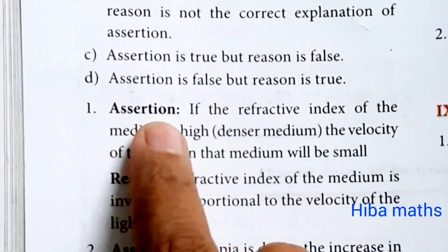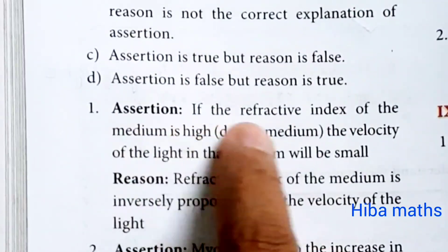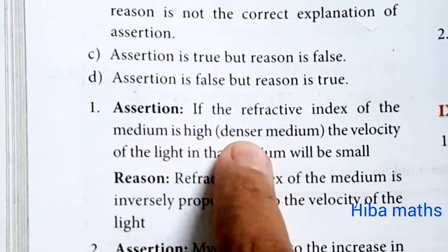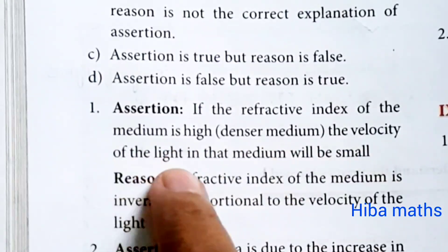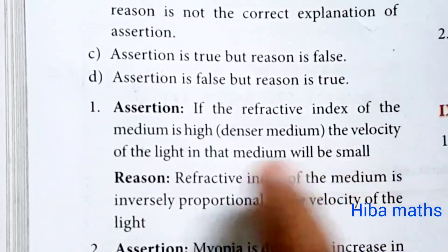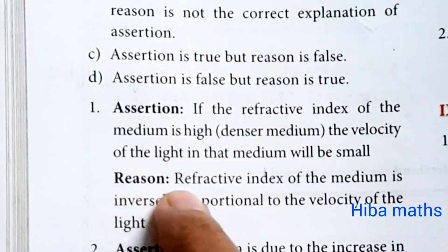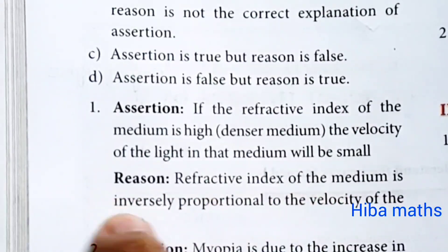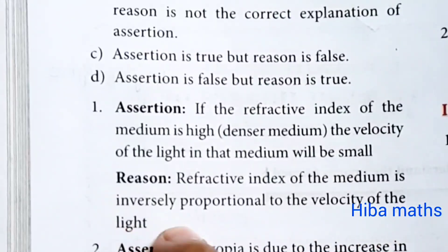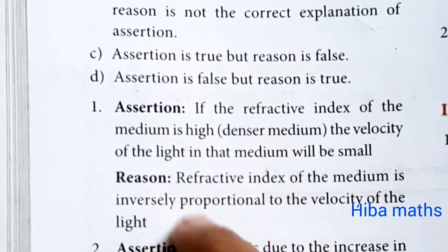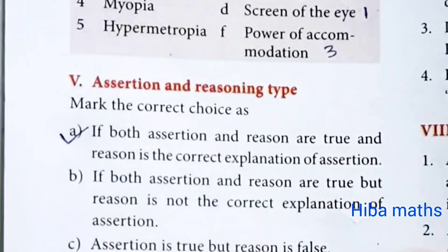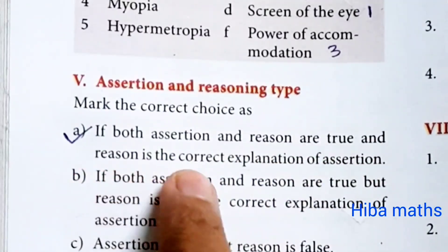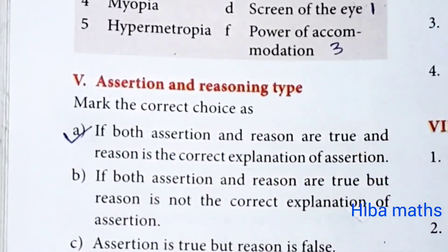Assertion and reasoning. First question — Assertion: if the refractive index of the medium is high, meaning it is a denser medium, the velocity of light in that medium will be small. Reason: refractive index of the medium is inversely proportional to the velocity of light. Answer: both assertion and reason are true and reason is the correct explanation of the assertion.